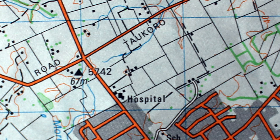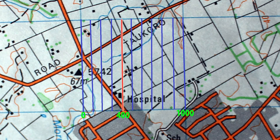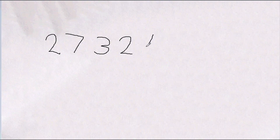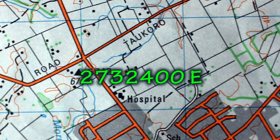The last three figures to write down represent the proportion of the square traveled to get to the feature, which in this case is the hospital. Instead of dividing the square by 10 as you would with a six-figure grid reference, you divide the square by 1,000. Since the hospital is 4 tenths along the square, it is 400 out of 1,000, so the last three numbers will be 400. The full Easting for the hospital will be 2732400 East.